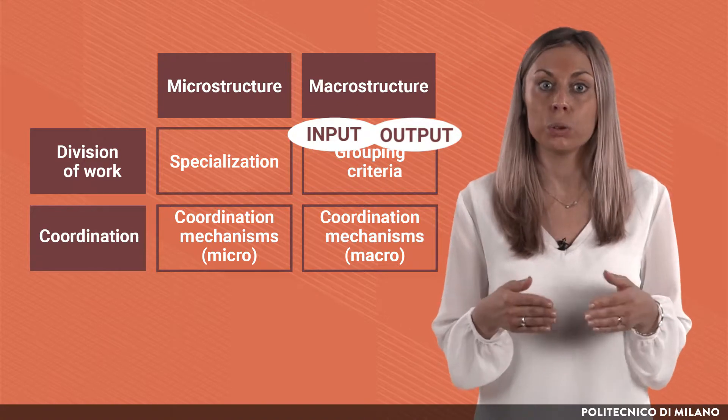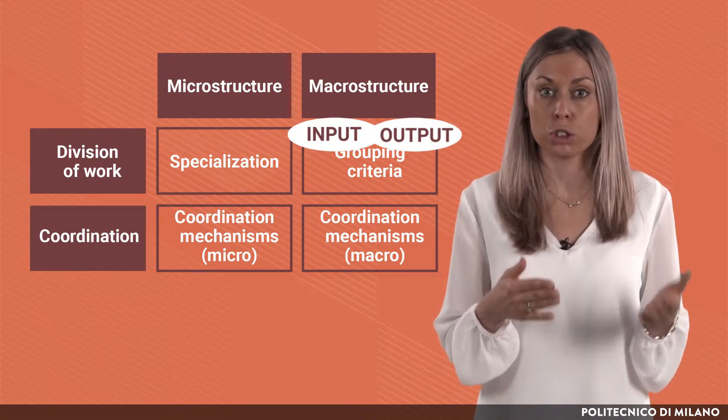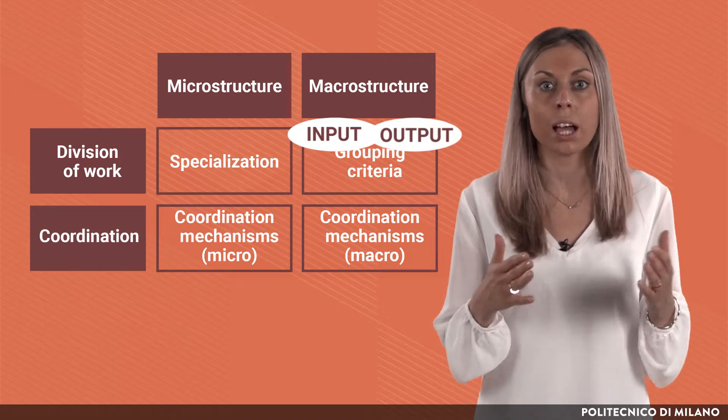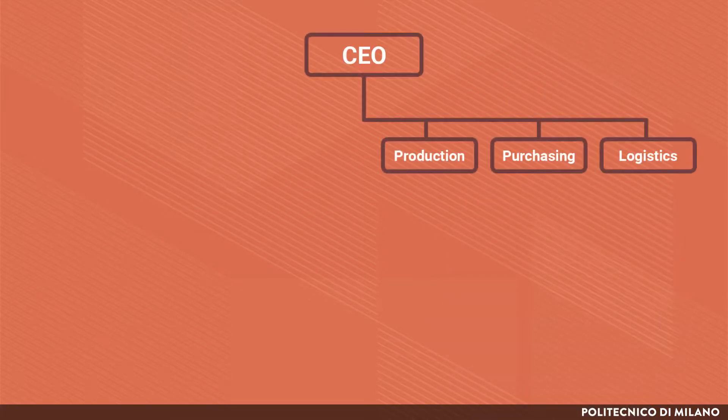Thereby, units at the first level of the organizational chart are a combination of functions and business units. Functional units are used mainly for those areas that are quite stable over time and for which the main purpose is to pursue economy of scales or economy of scope and to follow standardization. Considering a manufacturing company, typical examples might pertain to the production department, the purchasing department, or the logistics department.